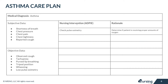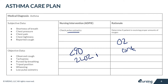Now let's take a look at the nursing interventions for asthma. You should check the patient's pulse oximetry to determine if the patient is receiving enough oxygen. You might want to put them on a continuous pulse ox device to monitor oxygen levels continuously. If the oxygen level is less than 90%, go ahead and put them on two liters of oxygen via nasal cannula. You might have to increase as appropriate, but keeping the patient at higher levels can be harmful if they don't really need it.